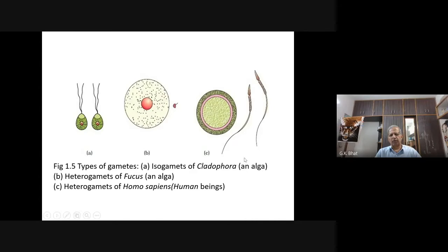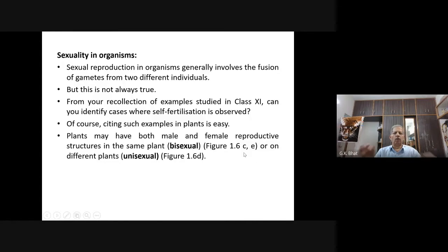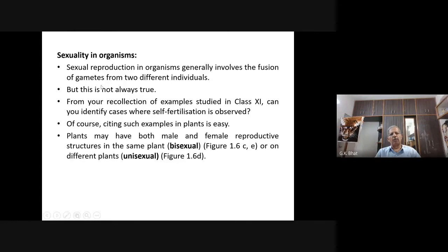Now let us look into sexuality in organisms. Sexual reproduction in organisms generally involves the fusion of gametes from two different individuals. But this is not always true. Is it that the gametes are produced by two different individuals? No, need not be.